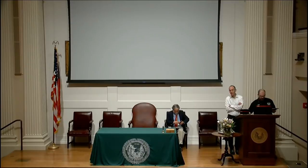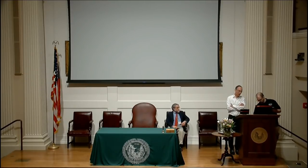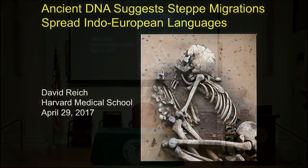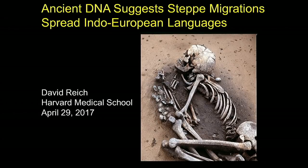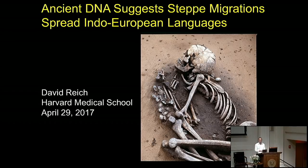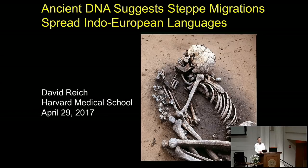Thank you for the opportunity to come speak to this group, and it's a particular pleasure to speak after Andrew Garrett. I'm going to be talking about work that I've been involved with in ancient DNA, which is an amazing new technology that's become possible on a genome-wide scale since 2010, and has made it possible to look at past archaeological cultures where we can obtain skeletons like this one in the photograph, get DNA from them, effectively sequence their whole genome, and compare them to individuals from other ancient archaeological cultures and to people today, to see how they're related.